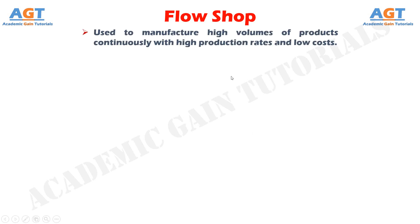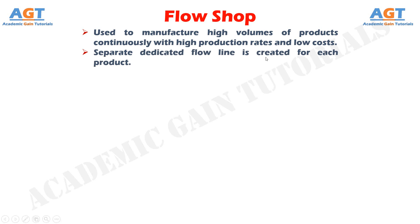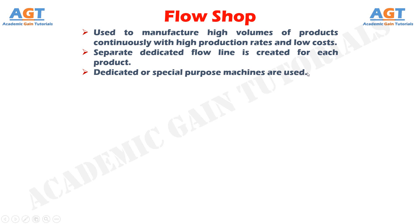The flow line manufacturing system is used to manufacture high volumes and high quantities of products continuously with high production rates and low costs. Flow shop uses the concept of production line, and a separate dedicated flow line is created for each product. Dedicated or special purpose machines are used to manufacture the products at high production rates. These machines are generally expensive.